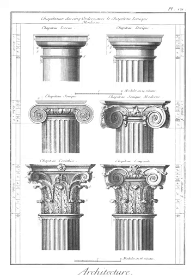Collarino or hypotrachelium (also collarino or hypotrachelium): the little frieze of the capital of the Tuscan and Doric column placed between the astragal and the annulets. It was called hypotrachelium by Vitruvius.